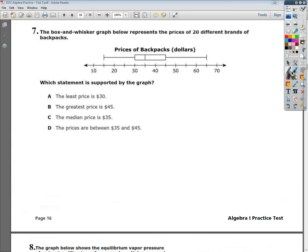Welcome, this is the Algebra 1 End of Course Practice Test, number 3, question number 7. The question says, the box and whisker graph below represents the prices of 20 different brands of backpacks. Which statement is supported by the graph?